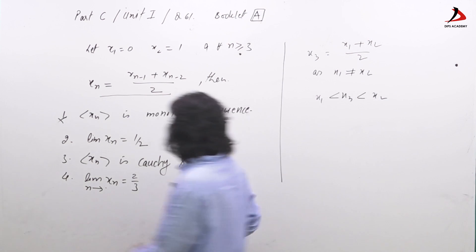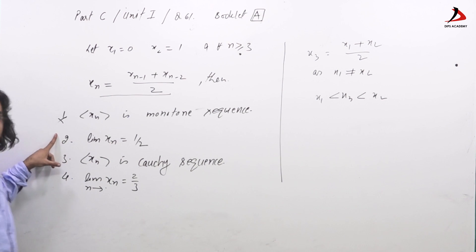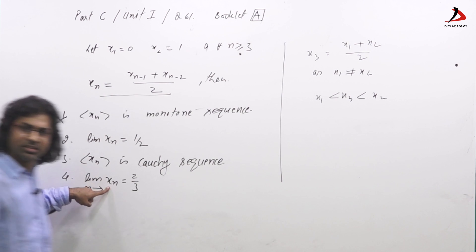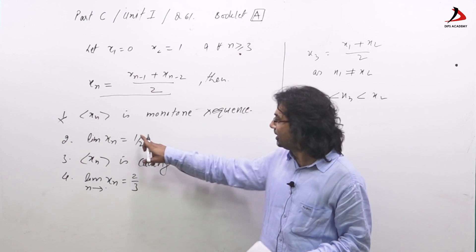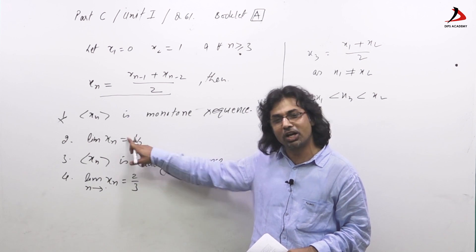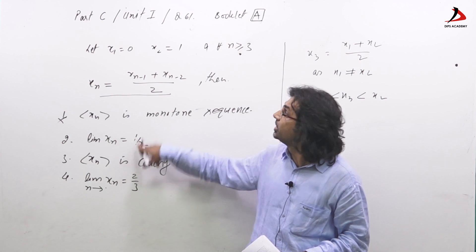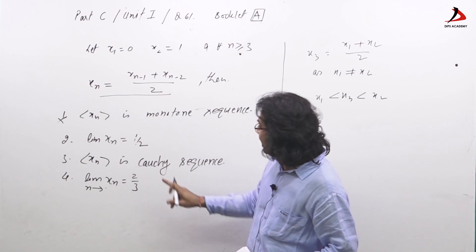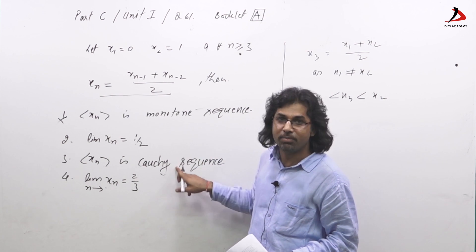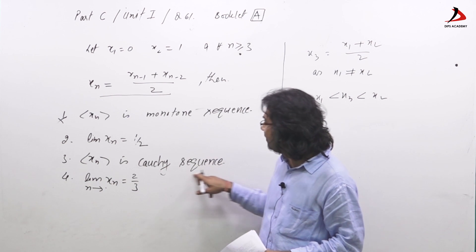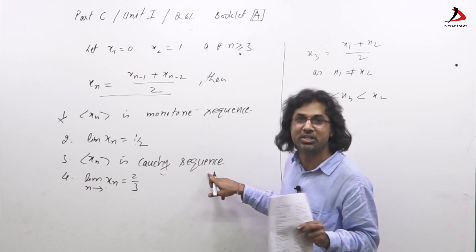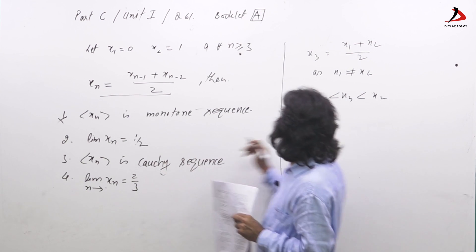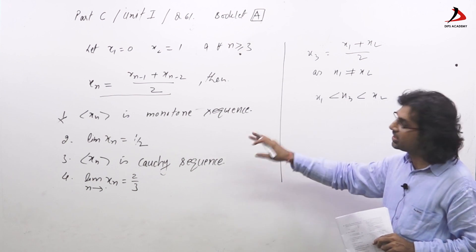The other options are dependent: either the sequence is Cauchy, or convergent, or neither — but both Cauchy and not-convergent together cannot be correct since this is part C with more than one correct option possible. A sequence is Cauchy if and only if it is convergent, by the completeness criterion. So let us determine whether this sequence is convergent or not.